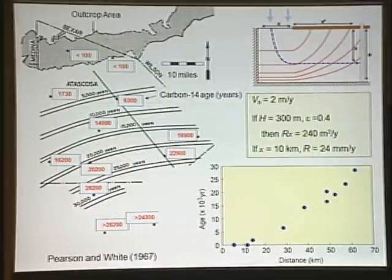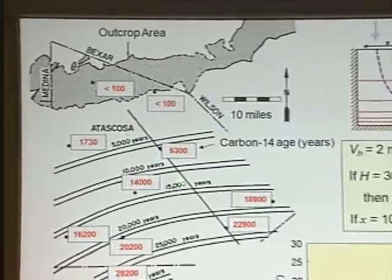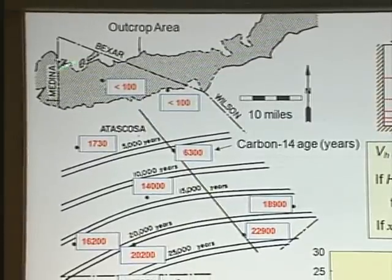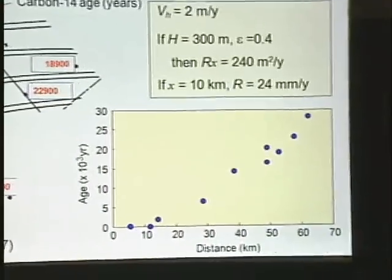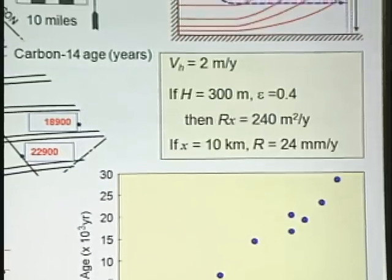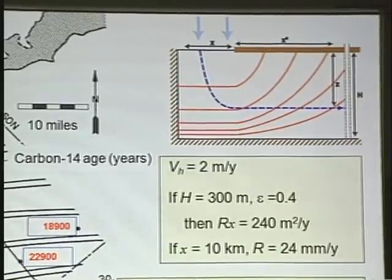Let me give you just a couple of studies. This is one of the first studies that used carbon-14 to estimate groundwater ages and flow rates — work by Pearson and White back in the '60s on the Carrizo Sand Aquifer in Texas. The outcrop area is the stippled area, and the water moves down through a confined aquifer. The numbers in red are the ages measured with carbon-14: in the outcrop area the water is less than 100 years old, and it gets older to more than 25,000 years further down the system. A plot of age versus distance from the outcrop gives pretty much a straight line, and the slope of that line is the water velocity. Assuming a confined aquifer model, we can calculate things like the recharge rate to that aquifer — really useful hydrologically.